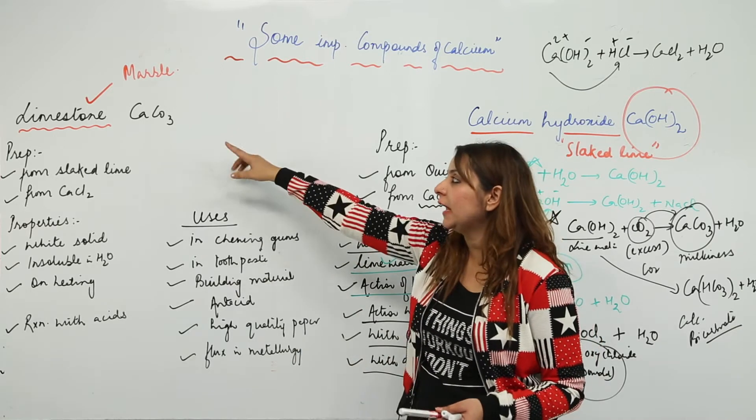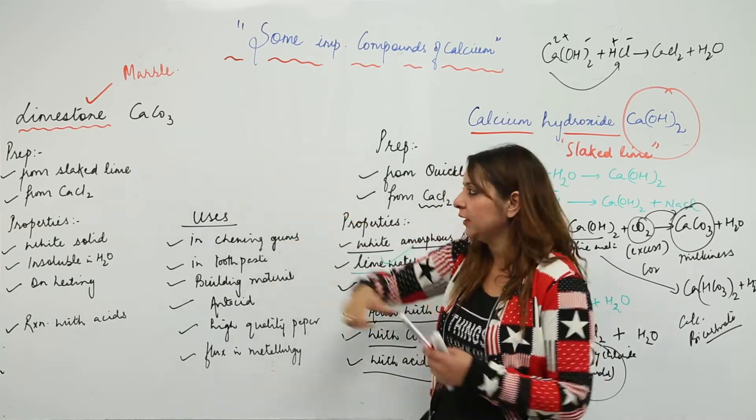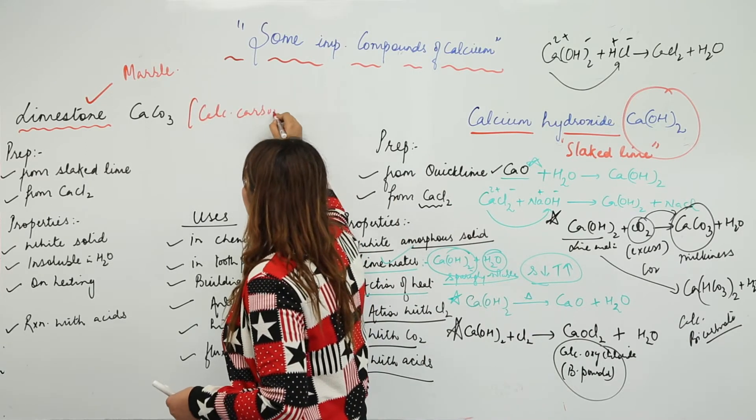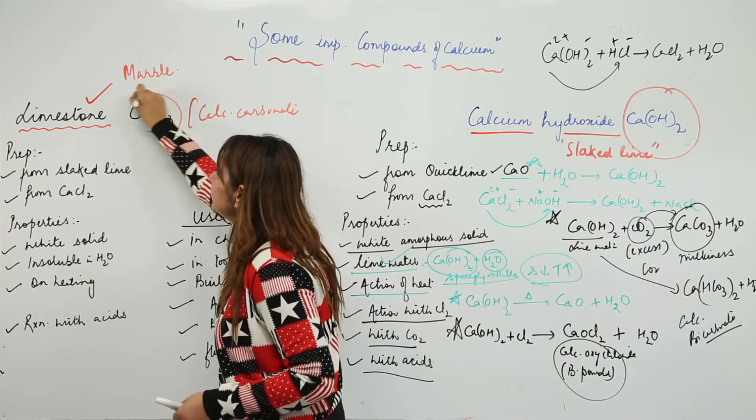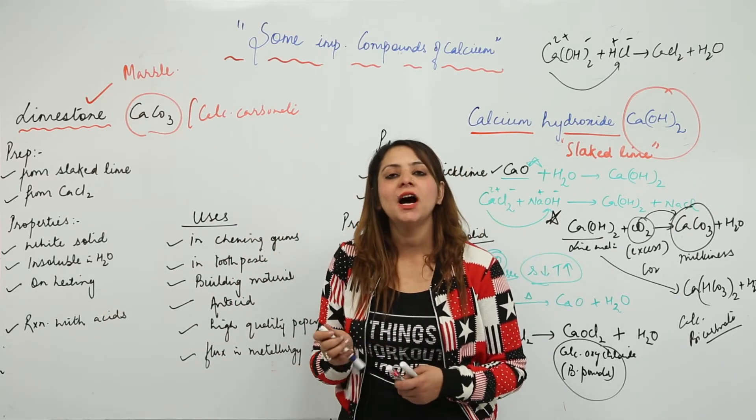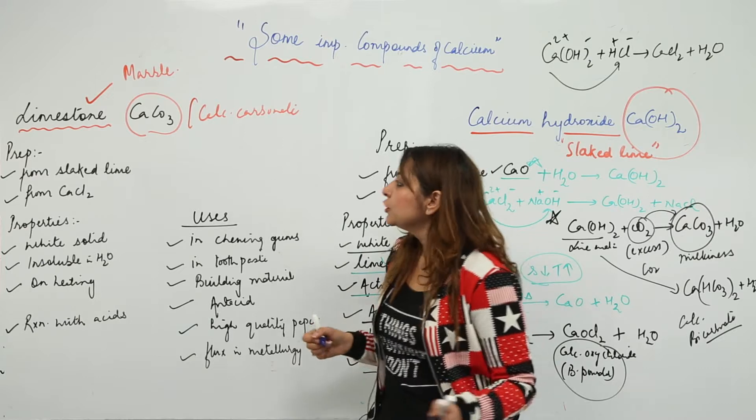The chemical name is calcium carbonate and the formula for it is CaCO3. First, let's look at how we can prepare this marble. Marbles are prepared by using slake lime, which is calcium hydroxide, and also by use of calcium chloride.